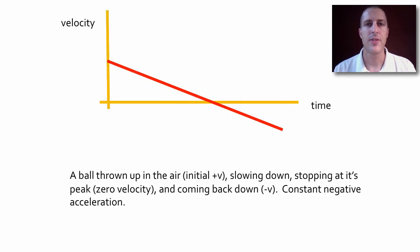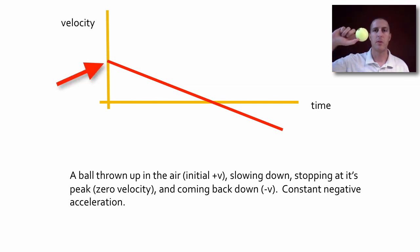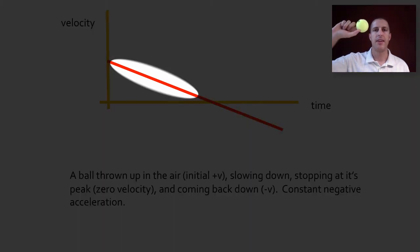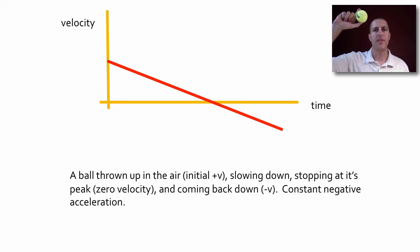So let's look at this velocity time graph. We have a constant negative slope, a nice straight line. What is this talking about? Well this could be describing a ball. We throw the ball up in the air so it has an initial positive velocity, remember it's positive. It's slowing down as it goes up until it reaches its peak.